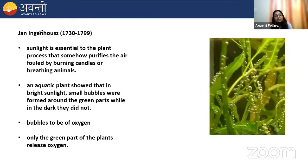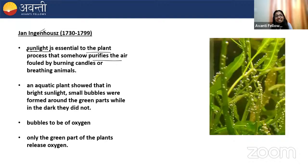The next experiment was done by Ingenhaus. He used a similar setup to Priestley and placed it in the dark and the light. He observed that sunlight is essential to the plant and it somehow purified the air damaged by the burning candle or breathing animals — showing that light is essential. Second, he took an aquatic plant and observed that bubbles came from the green parts of the plant. He later found these bubbles were oxygen, and proposed that only the green parts of the plant release oxygen.